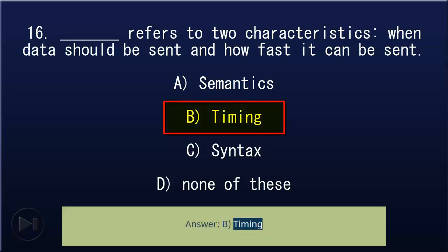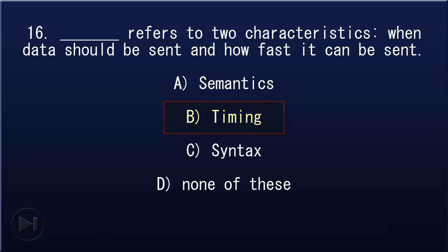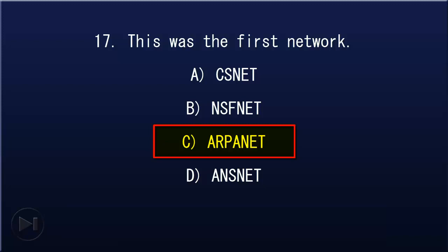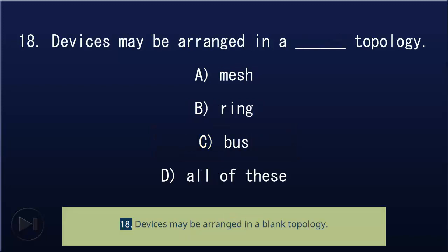17. This was the first network: A) ASNET, B) NSFNET, C) ARPANET, D) ANSNET. Answer: C, ARPANET.